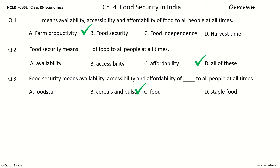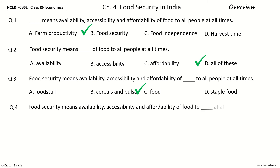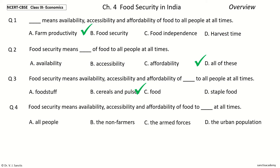Question 4: Food Security means Availability, Accessibility and Affordability of Food to Dash at all times. The options are All People, the Non-Farmers, the Armed Forces, the Urban Population. Your time to choose. And the answer is All People.